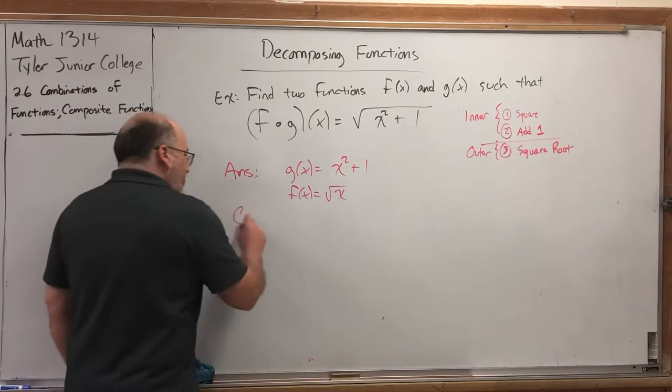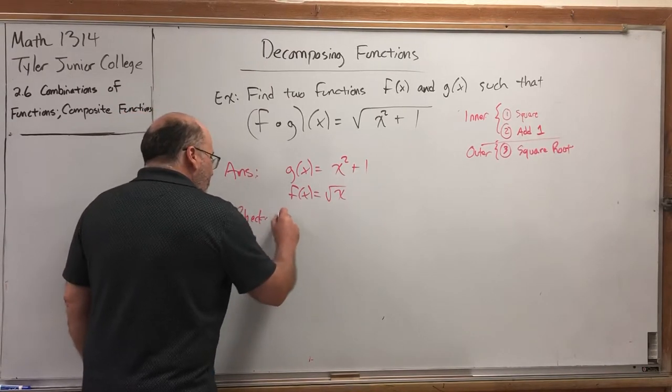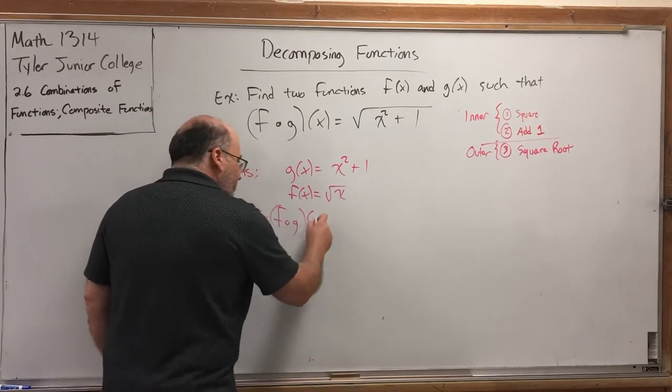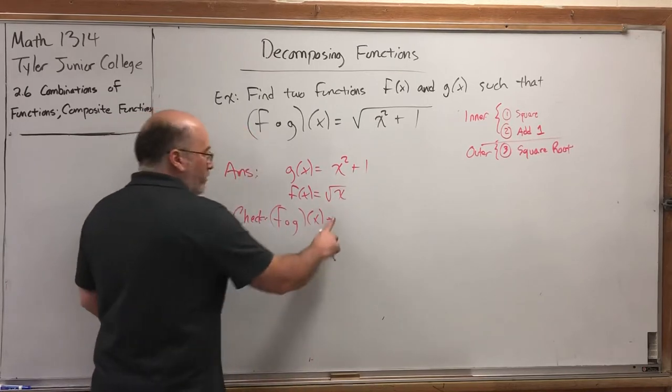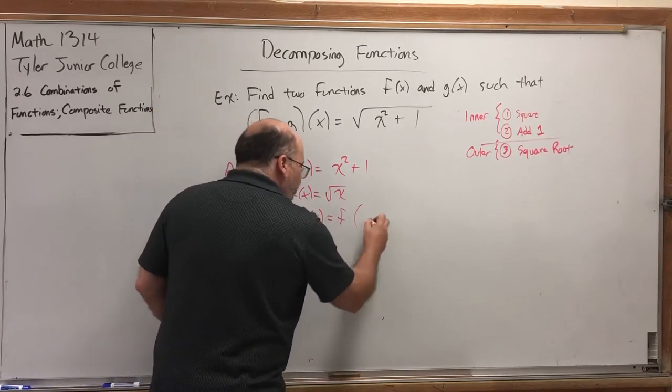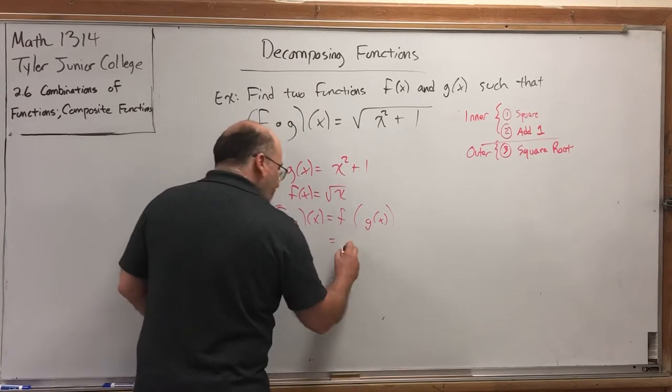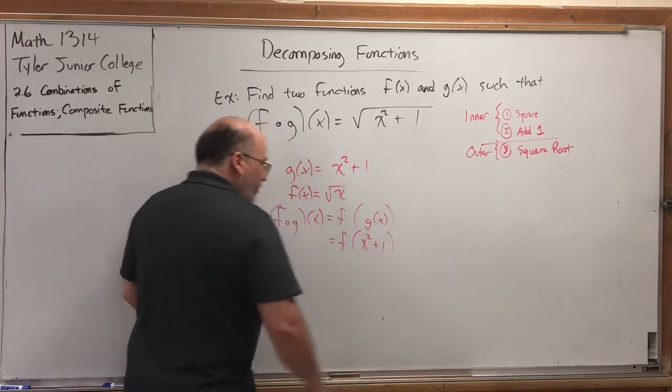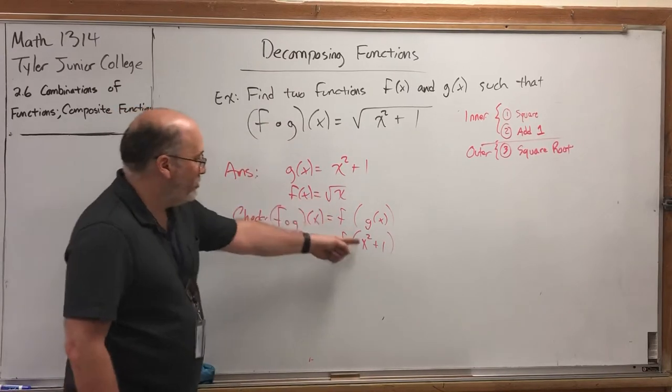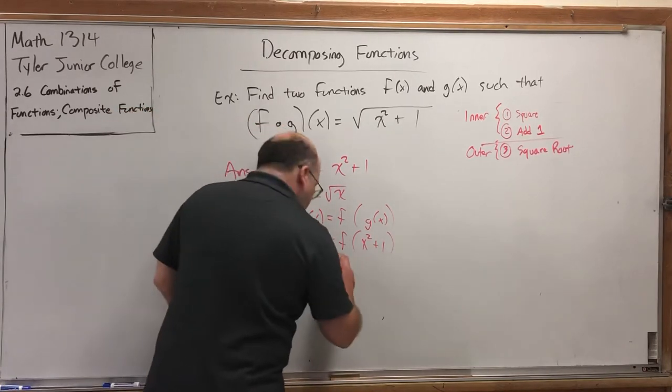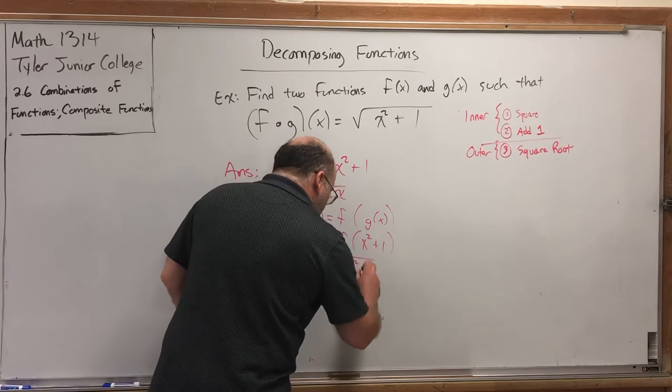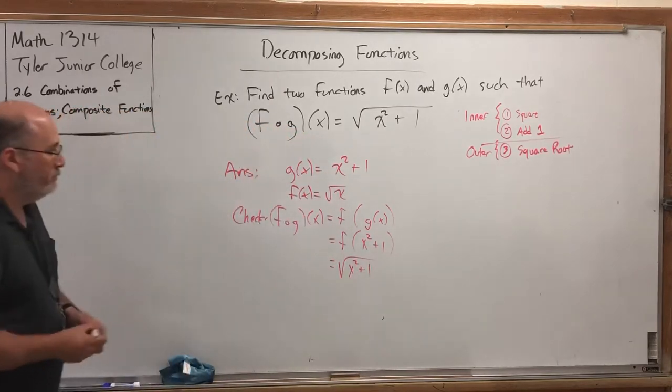And if you wanted to check it, f of g of x, my definition is f of g of x. You replace the inner function. The inner function is x squared plus 1. And then you apply the outer function to the inner function. If we square root this, we get the square root of x squared plus 1. Ta-da!